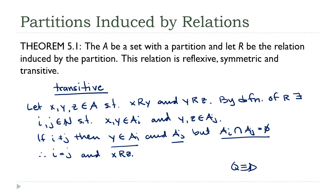So we've shown all three properties. Any time you have a partition on a set, you get a relation for free. In the next lecture, we'll look at a special kind of relation called an equivalence relation. As you'll see, this is a two-way street: a partition can induce a relation, and sometimes a relation can also induce a partition.